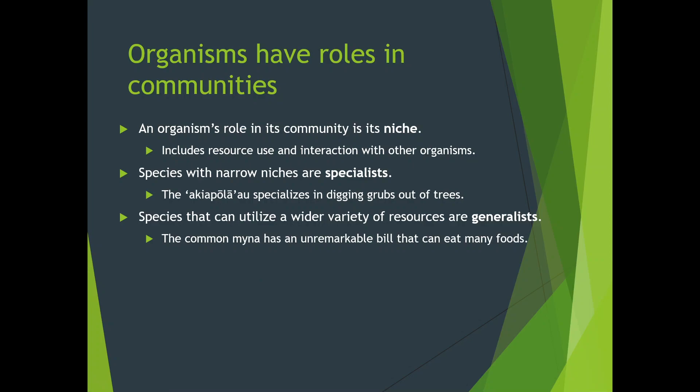An organism's role in a community is called its niche — what it does. A niche includes the resources it uses and its interactions with other organisms. Species with narrow niches are called specialists, like the panda bear — if something happens to that bamboo, they're much more susceptible to extinction. Whereas a generalist like a black bear can eat berries, rabbits, and all kinds of other things, making them far more resilient.